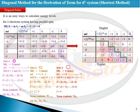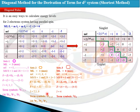The second set is also a triplet where the maximum ML value is one. If ML is one, the term will be P. Since it lies in the triplet region, this term will be a triplet P. The J value runs from two down to zero, so the total terms for this set will be ³P₂, ³P₁, and ³P₀.